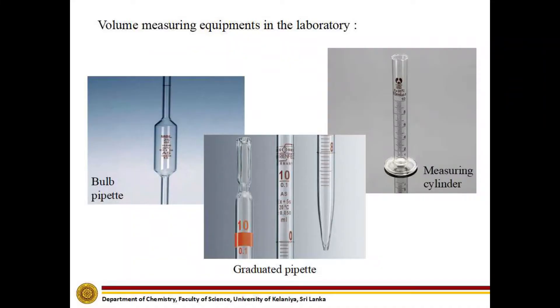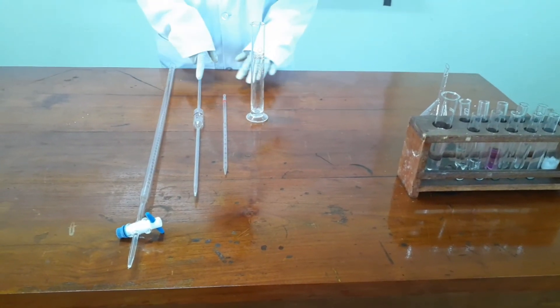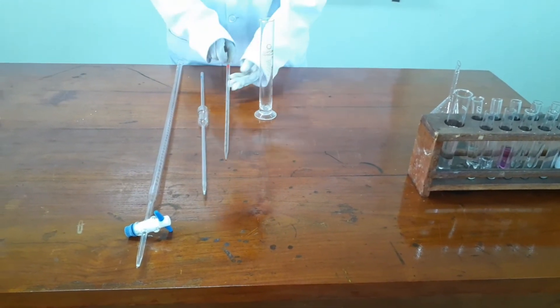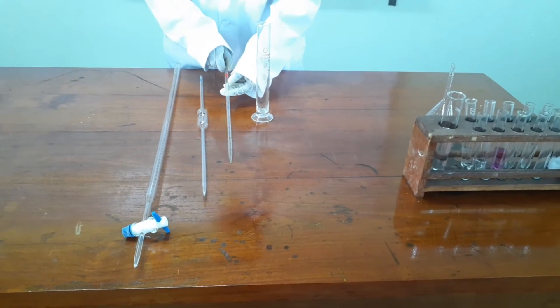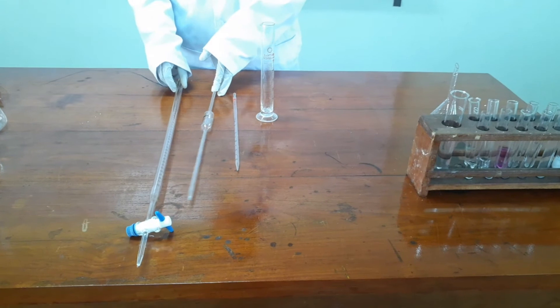Volume measuring equipment that we use in the laboratory. Those are the equipments that we use to measure volumes in a laboratory. This is the measuring cylinder, graduated pipette. This is the ball pipette and this is the burette.